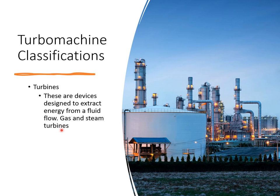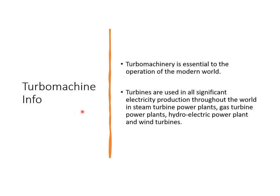In a gas turbine, gas is what's flowing inside the machine; in a steam turbine, steam flows. They're all just fluid. Turbo machines are very essential to industrial operations. Most large industries use turbo machines, and you'll encounter different types of them.